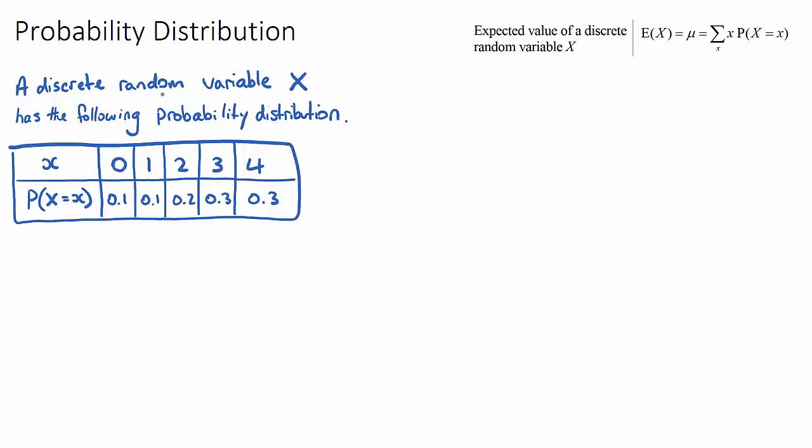So a discrete random variable X has the following probability distribution and we have a table here where we have X and this probability that X equals x. This can be a little bit intimidating to some students. They might think, what is this X and what is this x and how do they relate to each other?